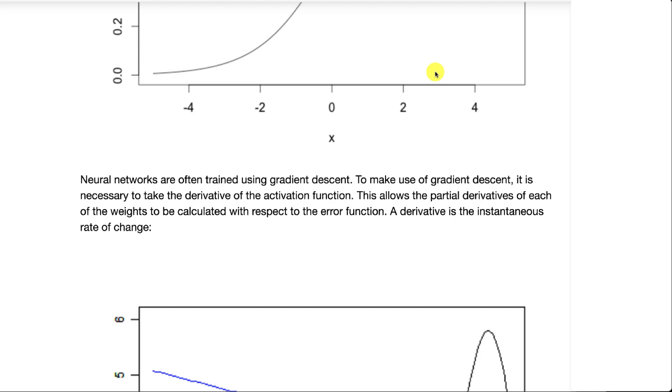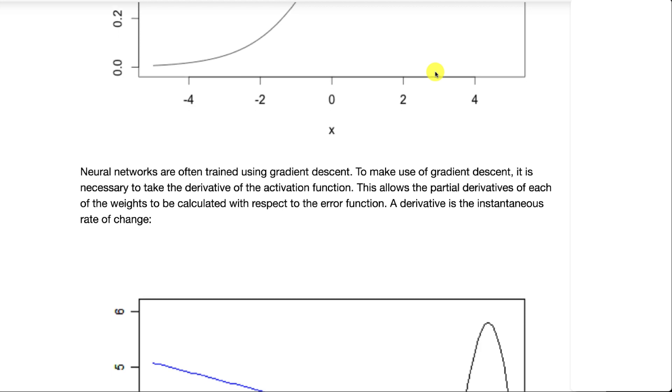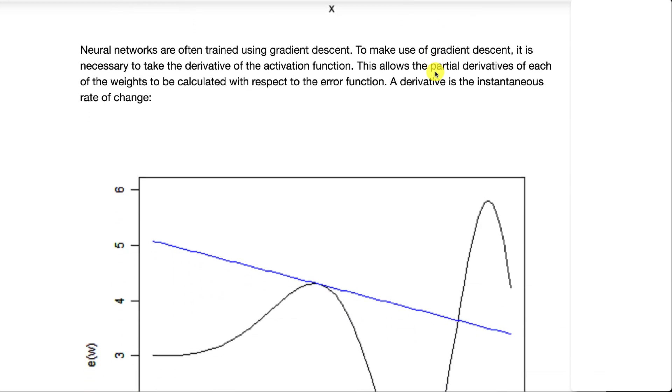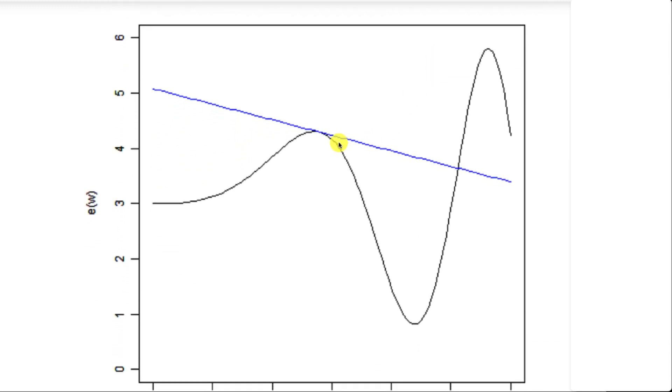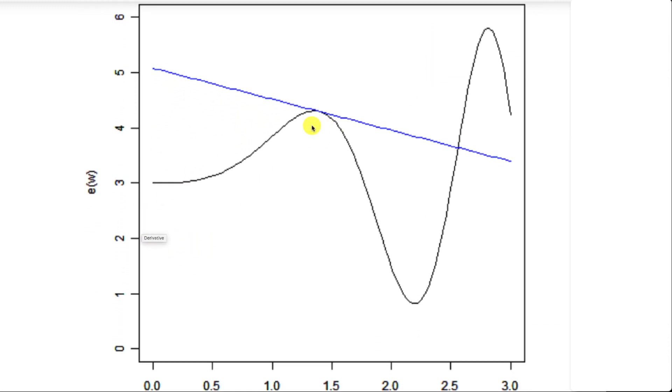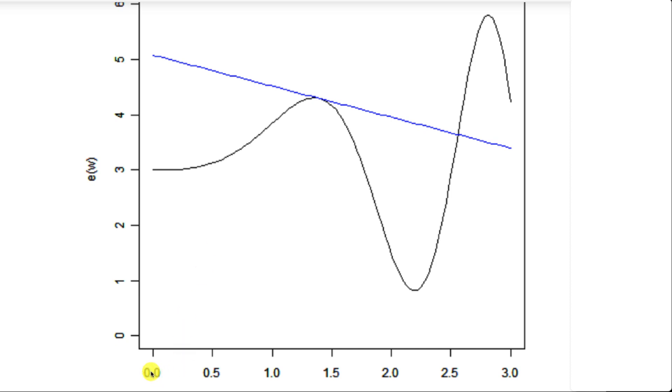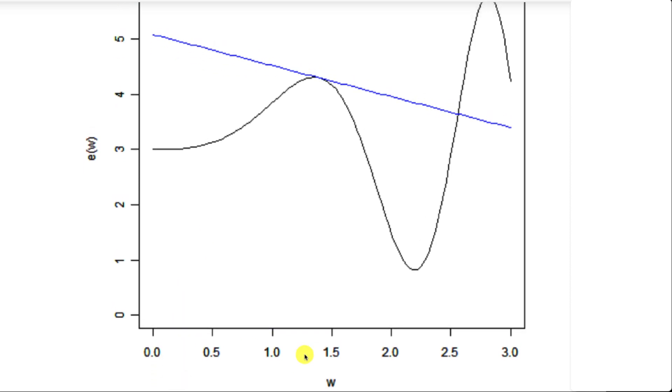You're typically optimizing these neural networks through gradient descent. So you're taking the derivative of the error function. This is the error function as we change a weight. As we change one weight, the error goes up, the error goes down.